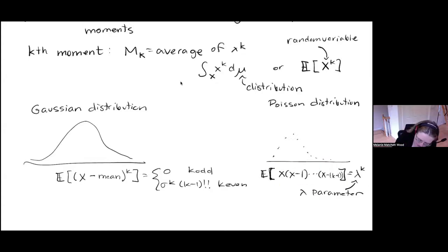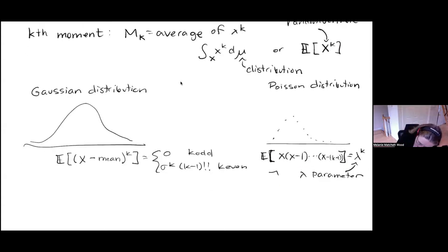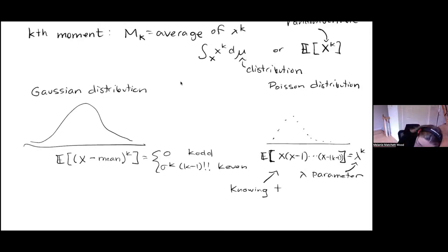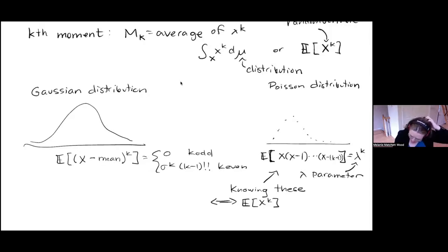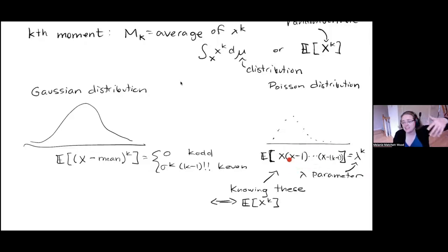Both of these are just essentially re-normalized kinds of moments. Knowing these is equivalent to knowing the averages of x to the k, because you expand this out and it's a polynomial of degree k in x. So if you know all the lower averages, you can get the kth one and vice versa.